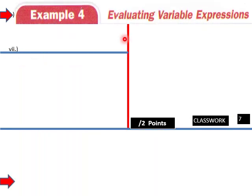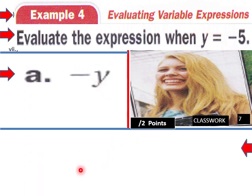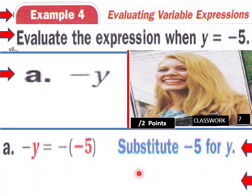Example 4: evaluating variable expressions. Evaluate the expression negative y when y equals negative 5. Substitute negative 5 for y, so negative y becomes the negative of negative 5. The negative of a negative is positive, so the answer is positive 5. The opposite of negative 5 is 5.